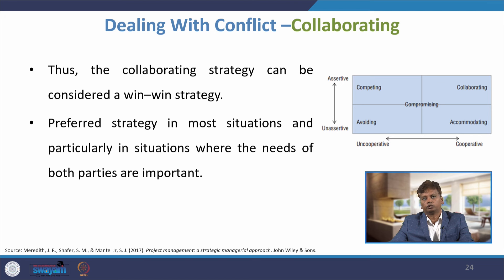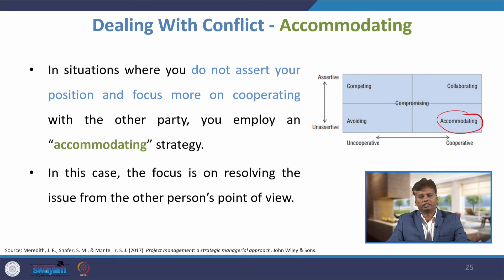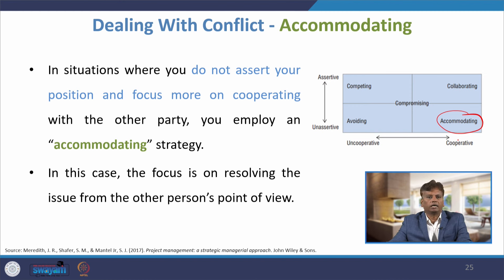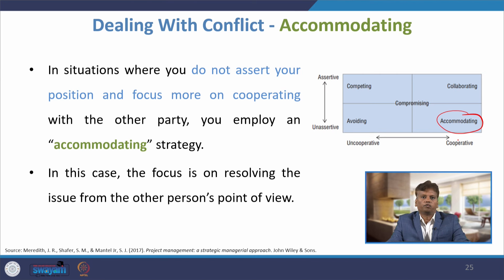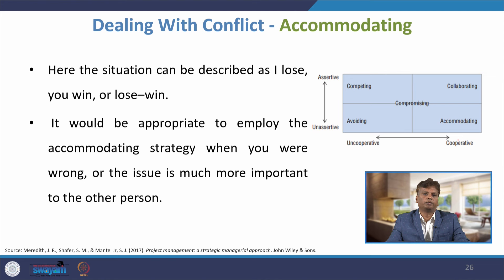The collaborating strategy is particularly preferred in situations where the needs of both parties are important. The next strategy is accommodating — a person is highly cooperative but unassertive. When you do not assert your position and focus on cooperating with the other party, you employ an accommodating strategy. The focus is on resolving the issue from the other person's point of view. This is described as an I-lose, you-win or lose-win strategy, appropriate when you are wrong or the issue is much more important to the other person.